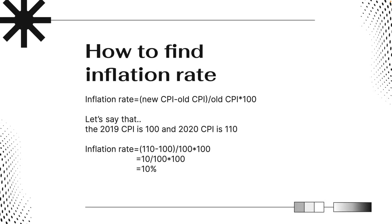To find the inflation rate, use this formula: new CPI minus old CPI, divided by old CPI, multiplied by 100. For a practice problem, let's say the 2019 CPI is 100 and the 2020 CPI is 110. The inflation rate is 110 minus 100, divided by 100, multiplied by 100.